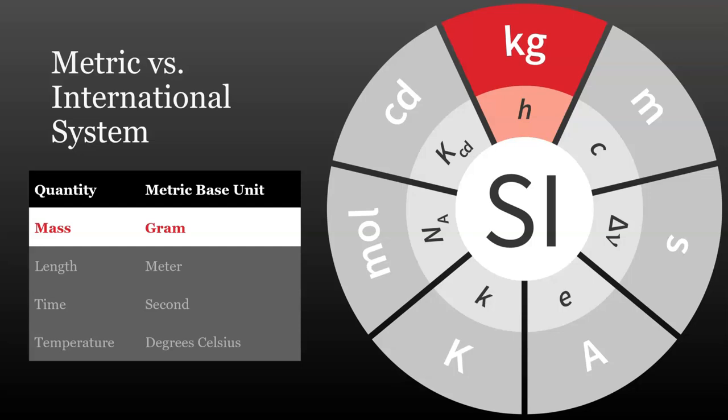The metric system uses the gram as its metric base unit, while the SI system uses the kilogram. Both systems use a unit called newtons for weight, a unit derived from kilograms along with a few other units.